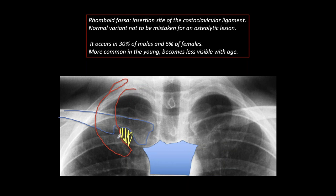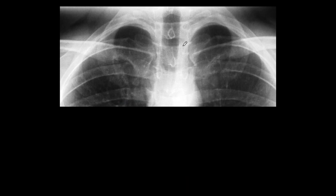It's a normal variant and should not be mistaken for an osteolytic lesion. It's not uncommon — it occurs in 30% of males and 5% of females, and as we get older it slowly disappears. Let me show you some examples. Sometimes it's unilateral, other times bilateral. Here we have a bilateral rhomboid fossa, a small one on the left and a larger one on the right. Notice the persistent sclerotic border, which is the hallmark of this lesion.